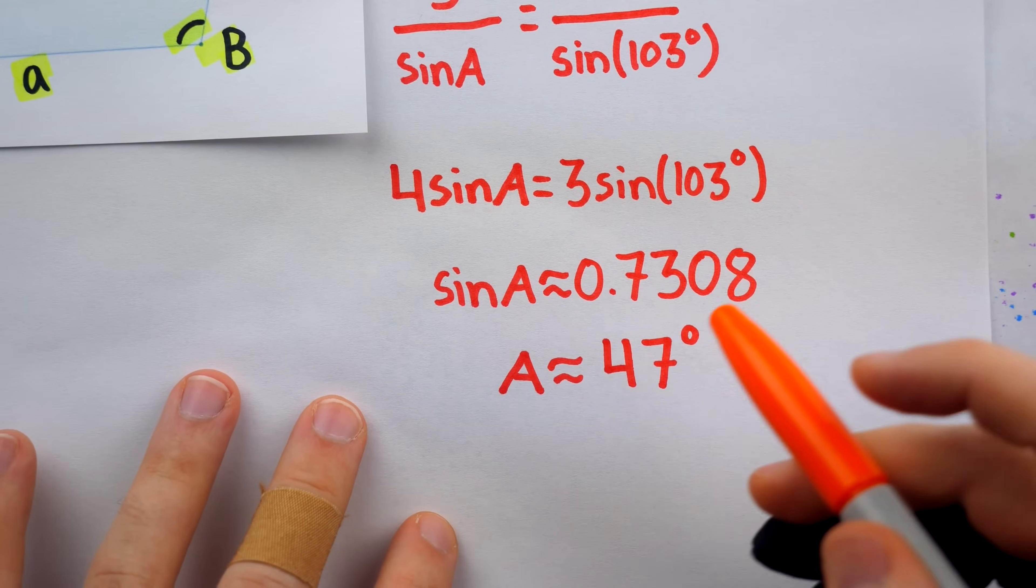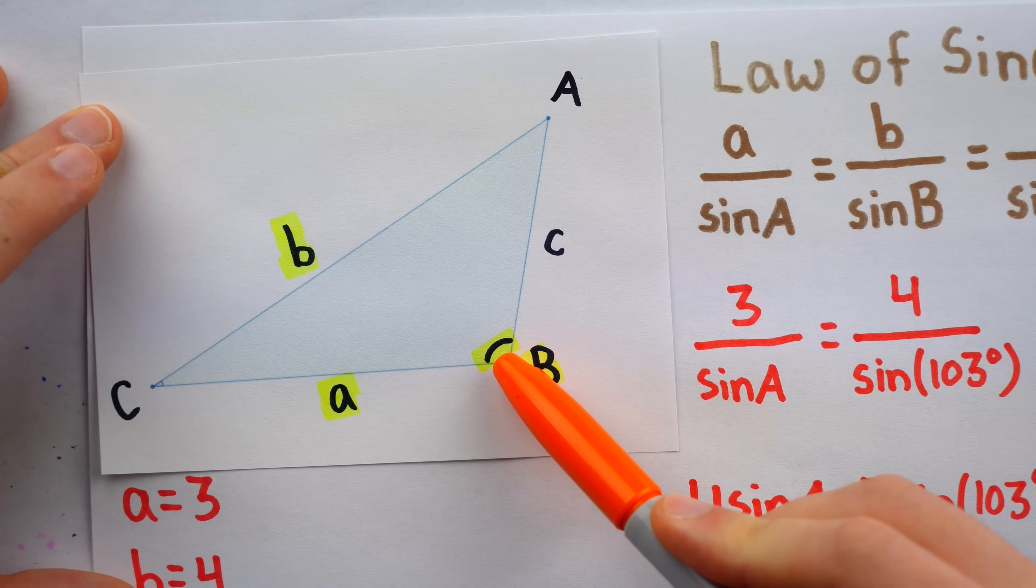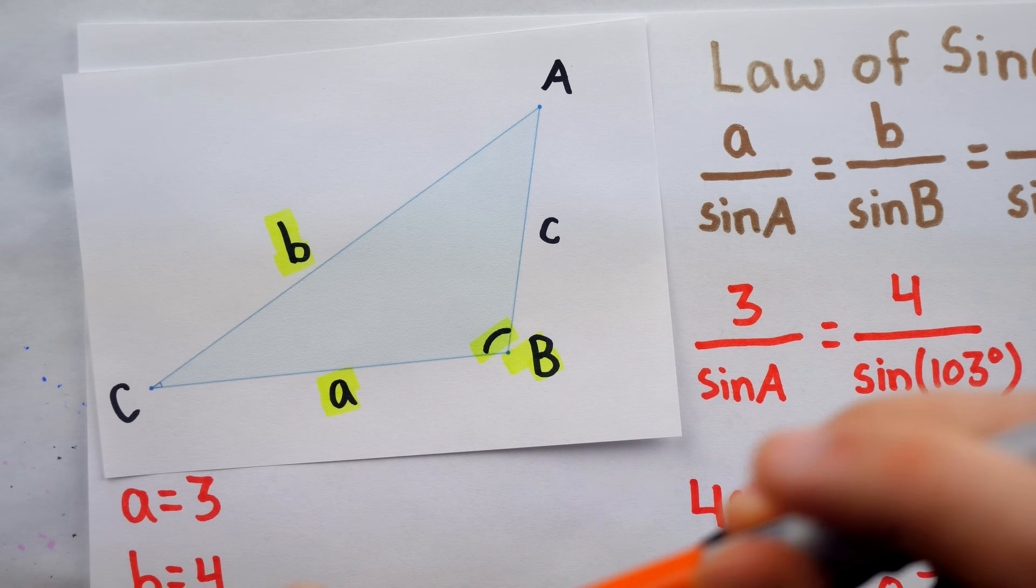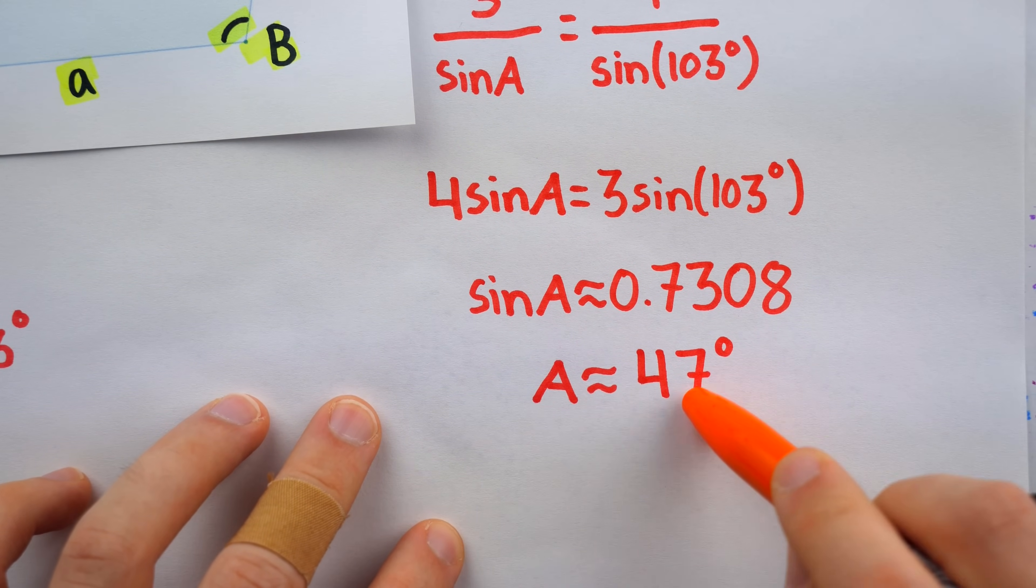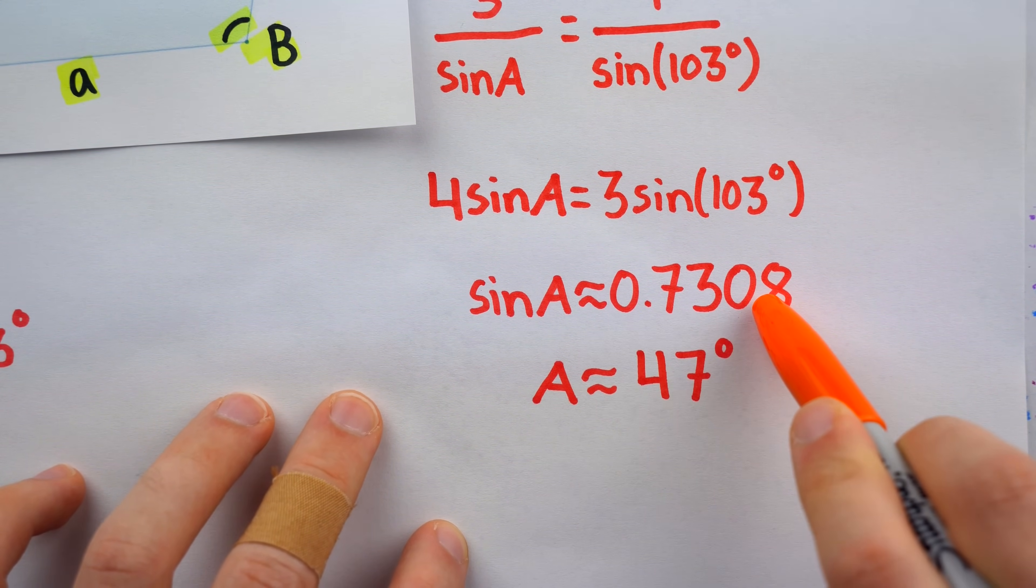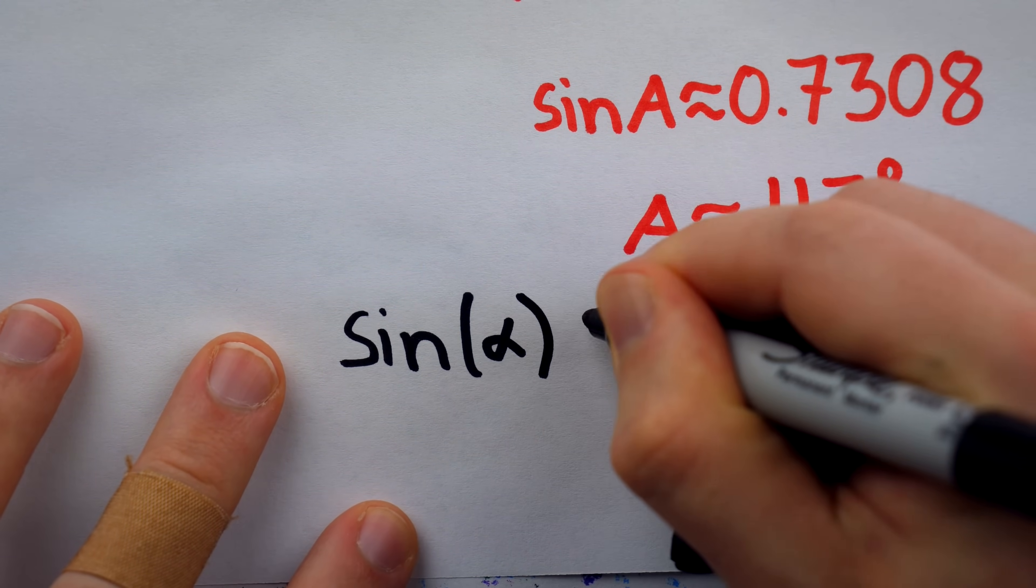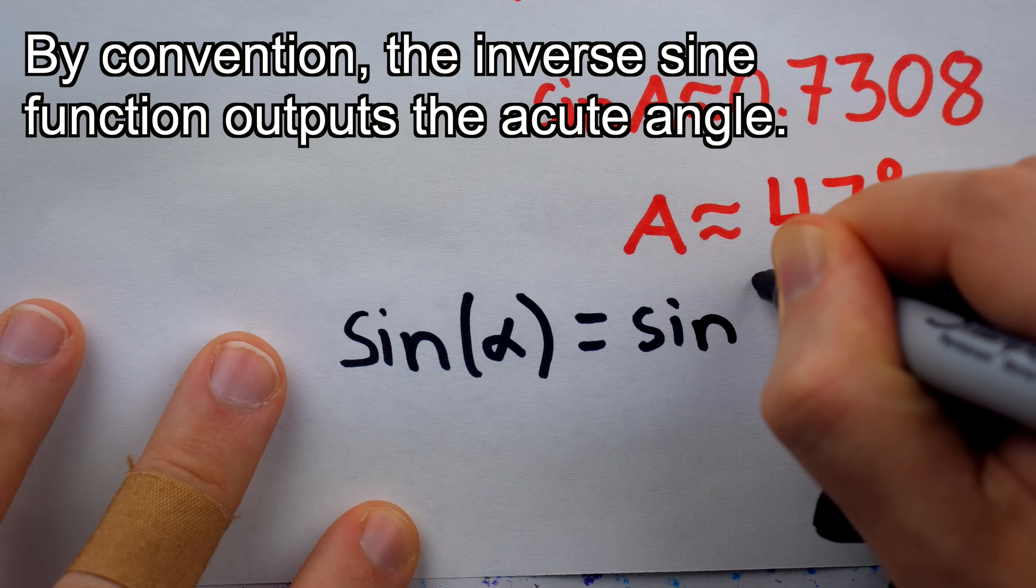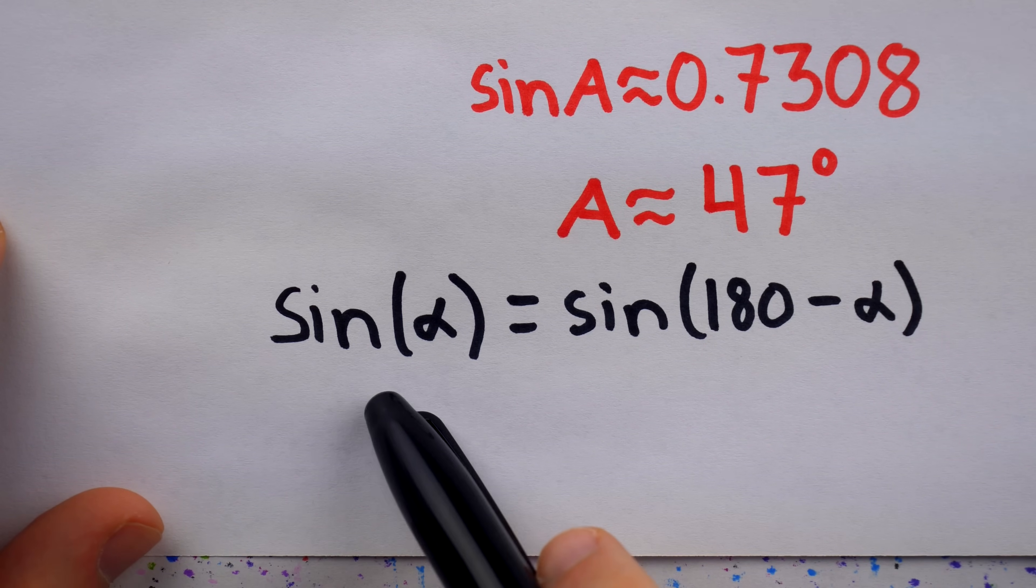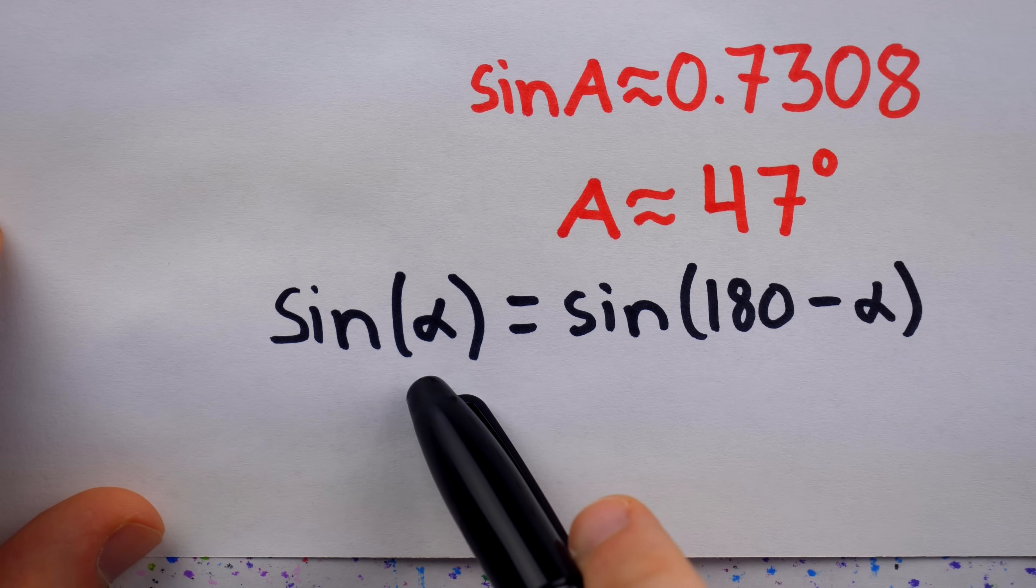You can do what the kids call cross-multiplying. 4 times sine a, we'll put that on the left side of the equation. And this must equal 3 times sine of 103 degrees. Then, to find sine of angle a, all we have to do is plug this into a calculator and divide it by 4. Going back to our trusty limited edition transparent green TI-83+, we have 3 times sine of 103, and then divide this by 4. That's about 0.7308. Of course, we want information about the triangle. We want to actually know what angle a is.